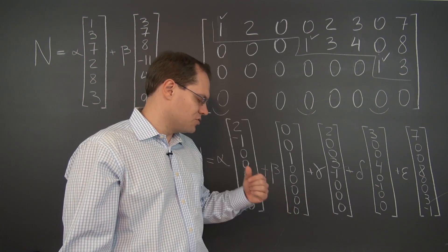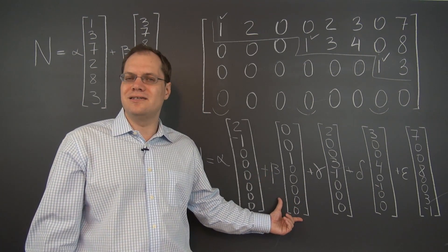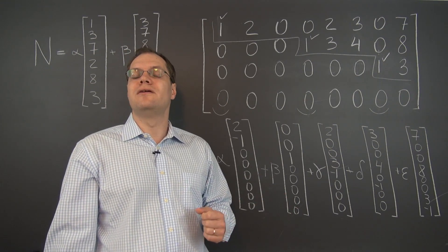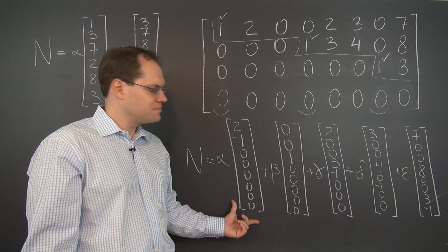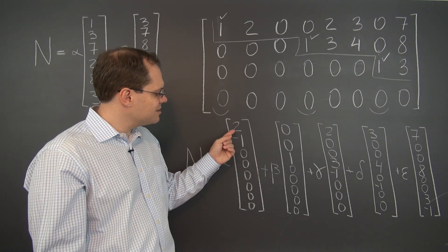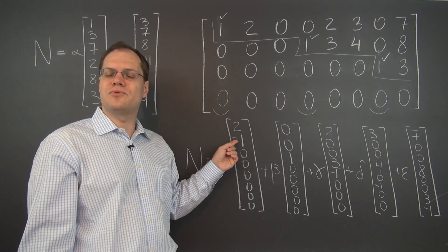So right away, simply by looking at this element of the null space, we're able to determine a column in the matrix. What does this element tell us? Well, this element clearly tells us that the second column is twice the first.